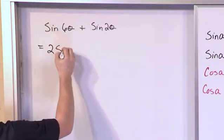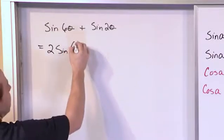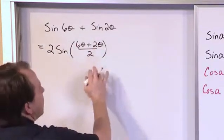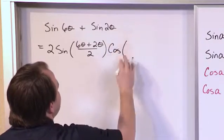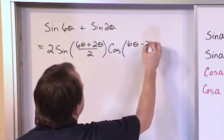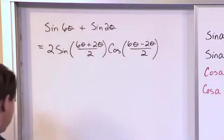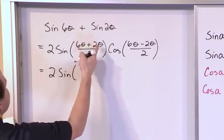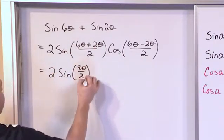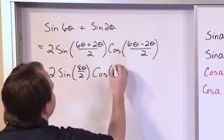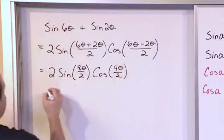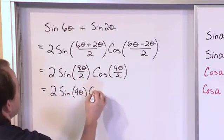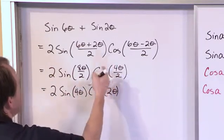So it's 2 times the sine of A plus B over 2, so it's 6 theta plus 2 theta over 2, and then it's multiplied by the cosine of A minus B over 2, which is 6 theta minus 2 theta over 2. So that's what we have. And at the end of the day, it'll be 2 times the sine of, this is 8 theta on the top over 2, cosine, this is 4 theta over 2. And we just do a little cancellation, 2 times the sine of 4 theta times the cosine of 2 theta, just doing this division here.